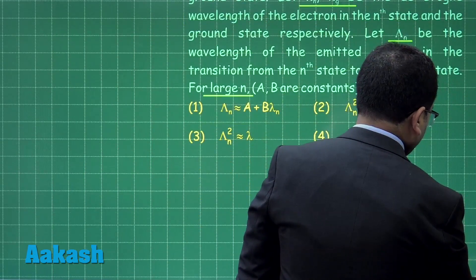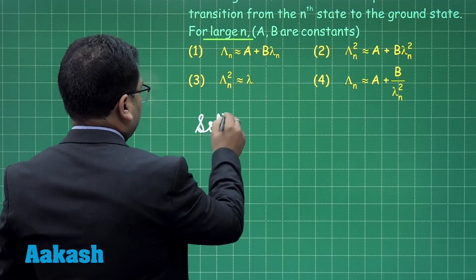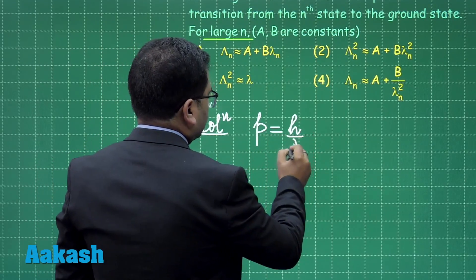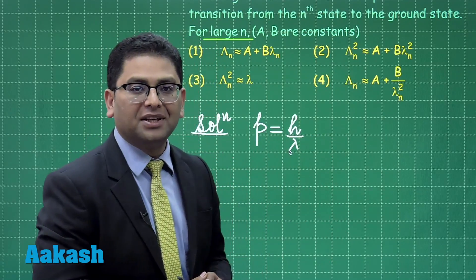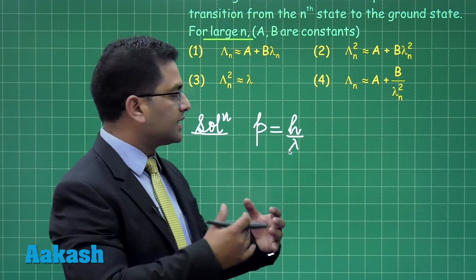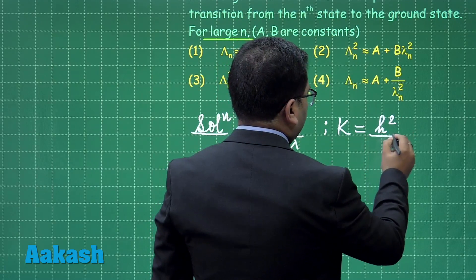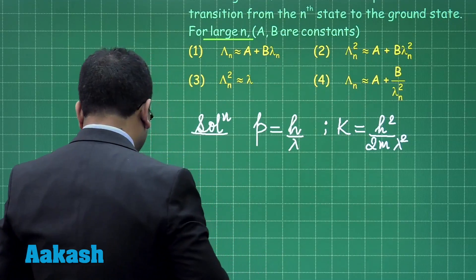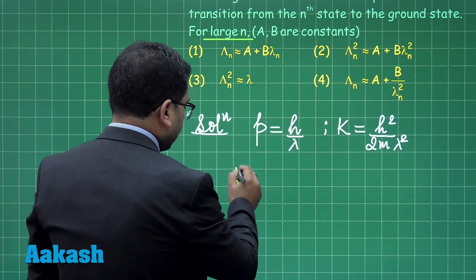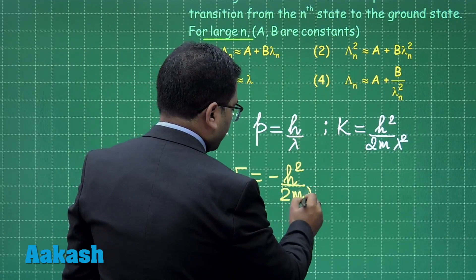Let's try to see the solution — we need to move step by step. Since p = h/λ, we are talking about the de Broglie wavelength; the smaller lambda is the de Broglie wavelength and capital lambda is the wavelength of transition. I want the energy: kinetic energy is p²/2m, which equals h²/(2m·λ²). The total energy of the electron equals minus the kinetic energy, so it equals −h²/(2m·λ²). At the nth state, we use the wavelength at the nth state.